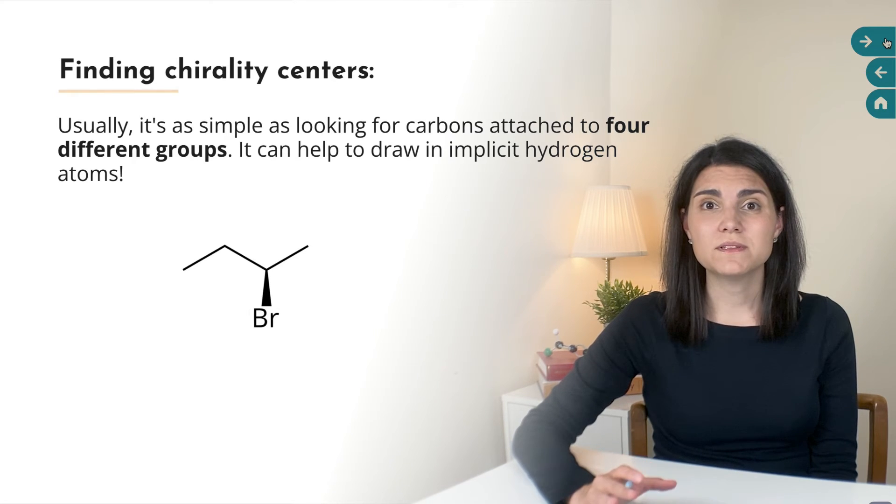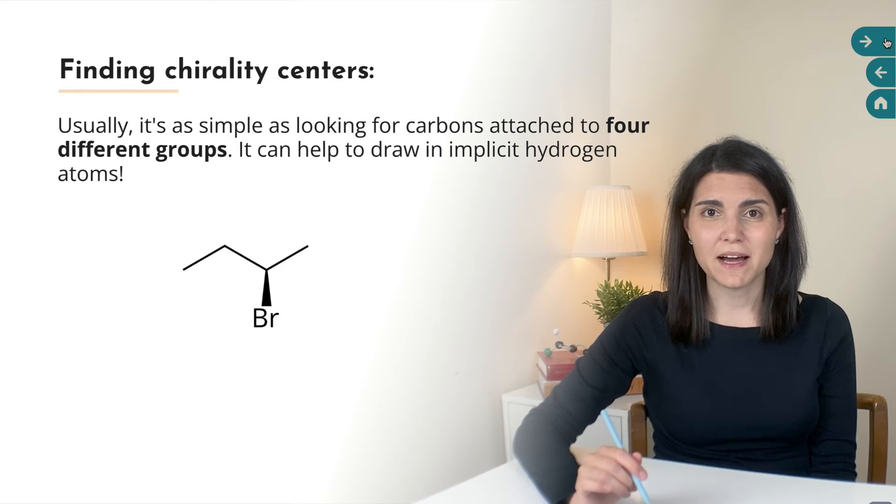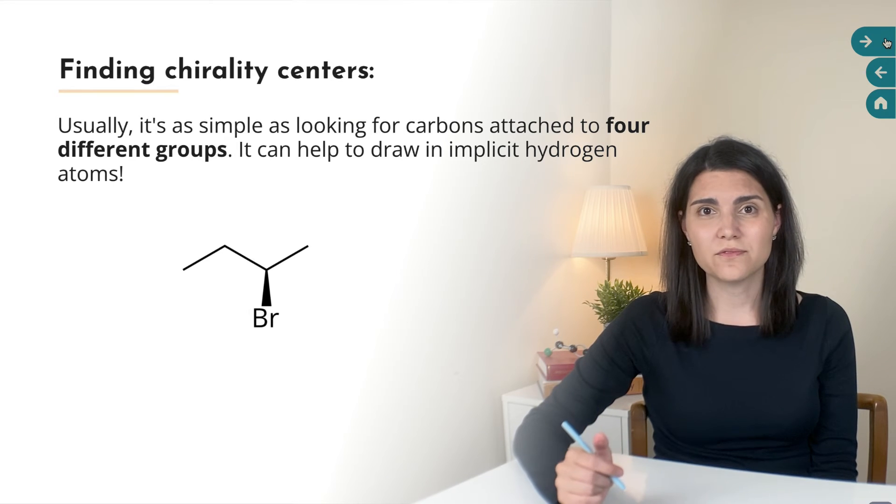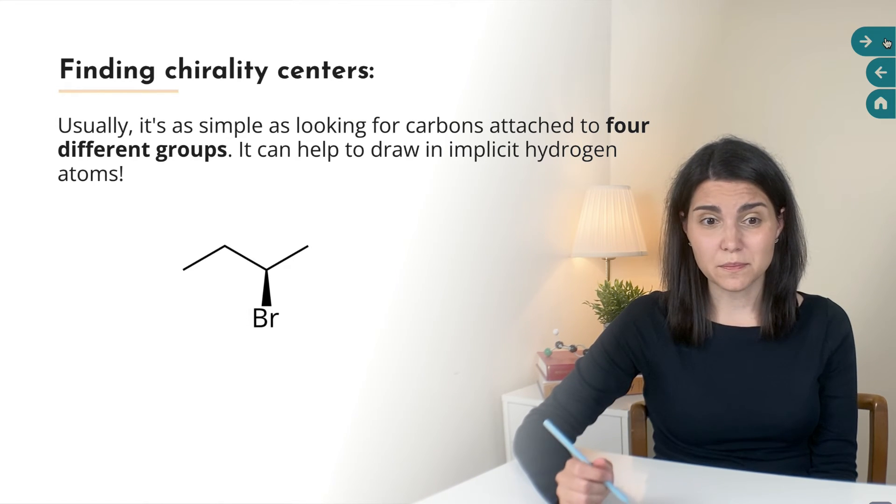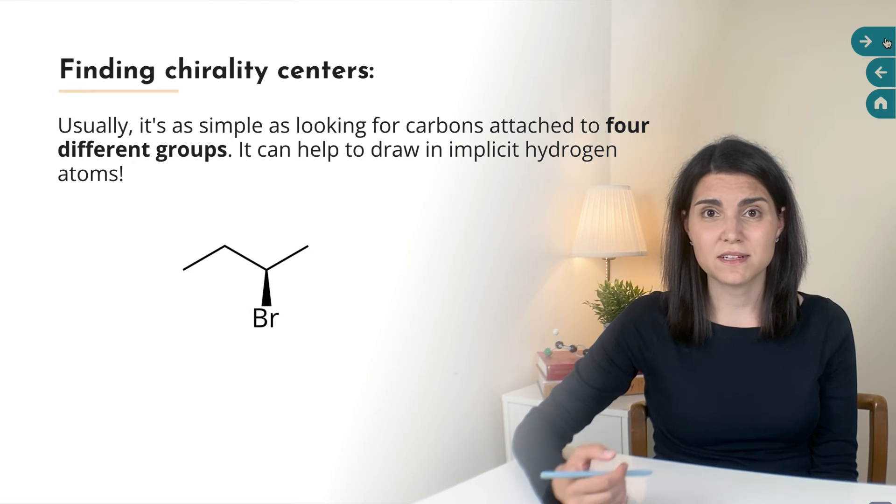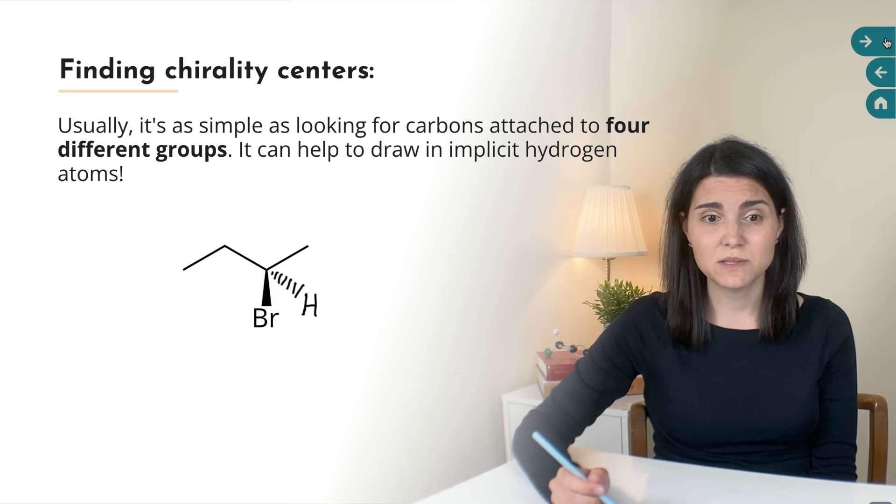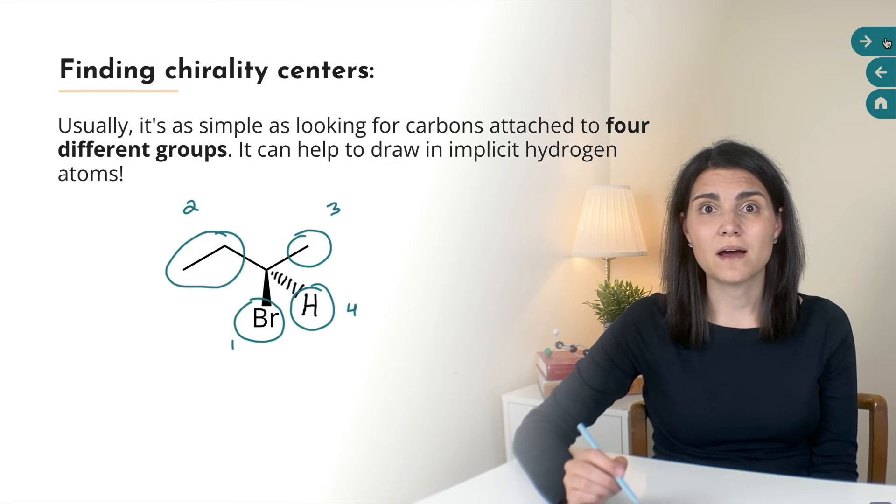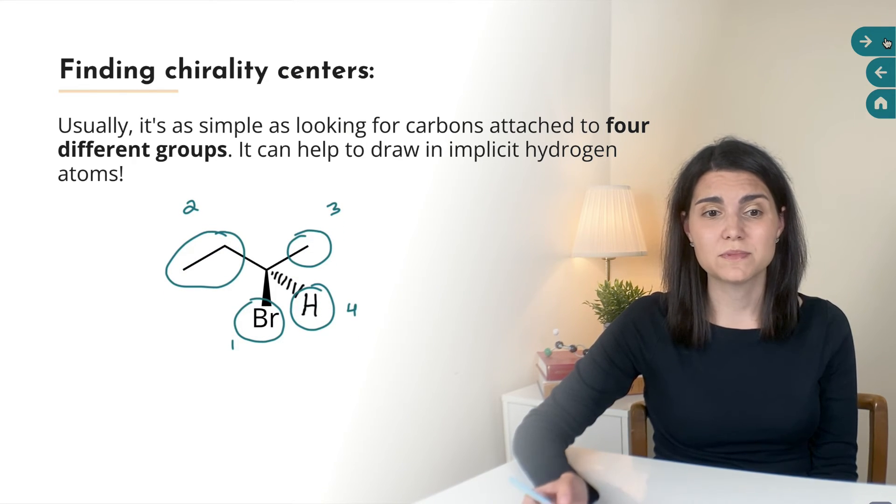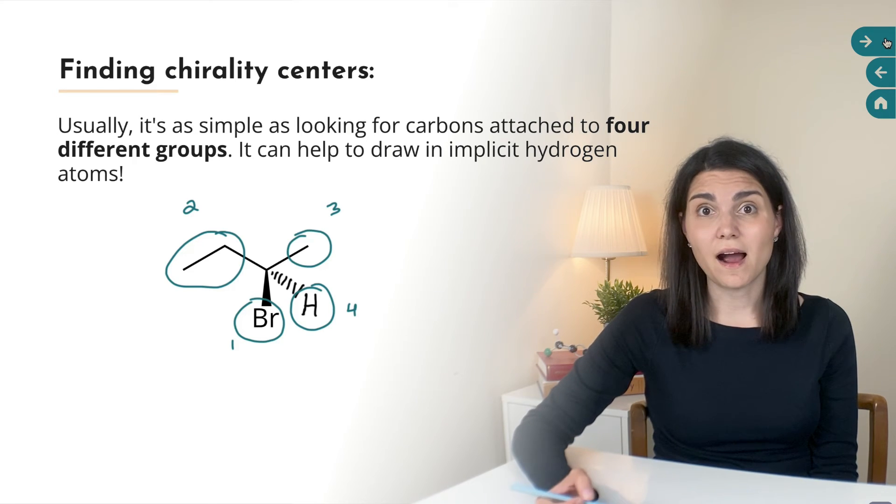However, you might want to make sure that you remember about implicit hydrogen atoms. You can draw those in because hydrogen atoms are often one of the four groups on a chirality center, but they're not always drawn in explicitly. So for example, here's a molecule with a bromine. It's on a wedged bond. So that bromine is pointing out at us. And it's also understood that there's a hydrogen atom on that carbon as well. It would be pointing away from us into the page. So we draw it on the dashed bond. And now we can clearly see that this carbon atom is bonded to four different groups. One, two, three, four. So it is in fact a chirality center.